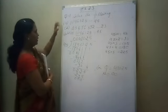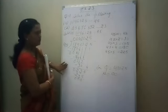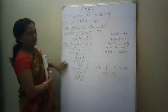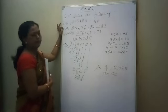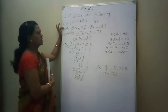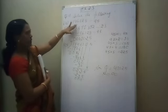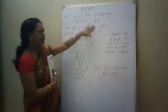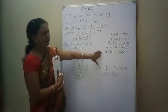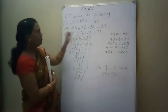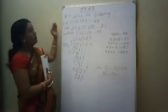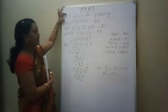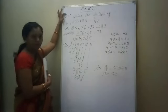The remainder is 0. Okay, now your A part is over. I hope you can do the B part, which is the same as the A part. Now we will do question number 5, which is the same as question number 4.